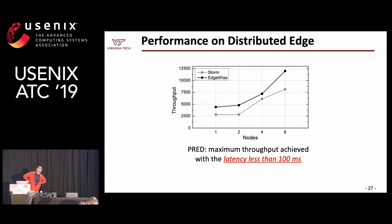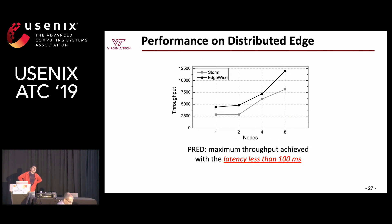Q: Have you considered mobility — what happens when nodes move around and are not well connected? A: In our current model, we only consider well-connected gateways. Our motivation comes from a smart building at Virginia Tech, so our model is based on that scenario. But we consider mobility as future work.